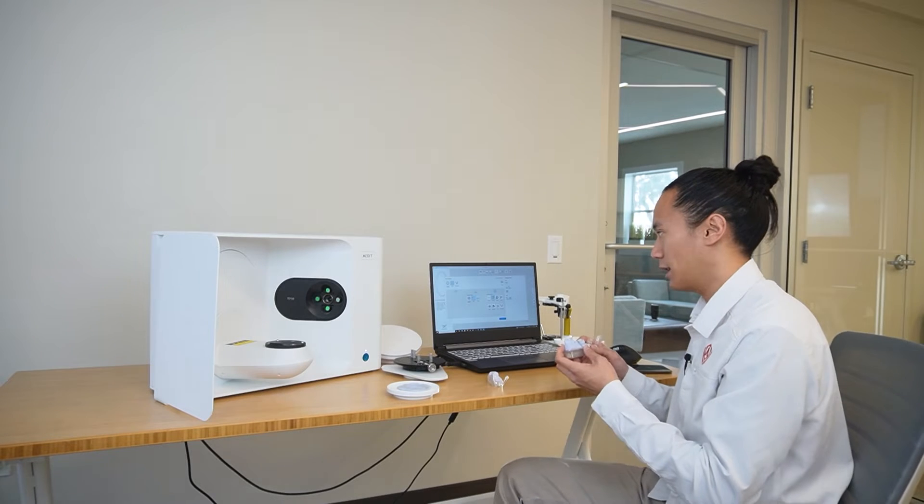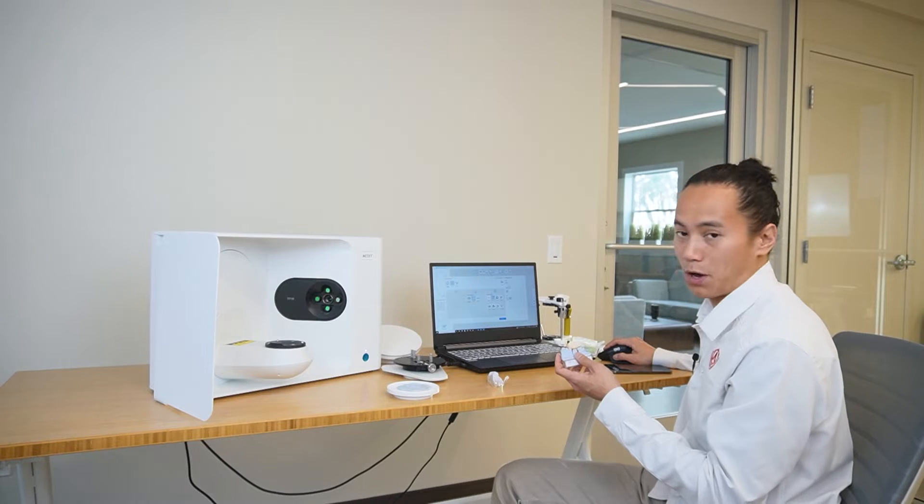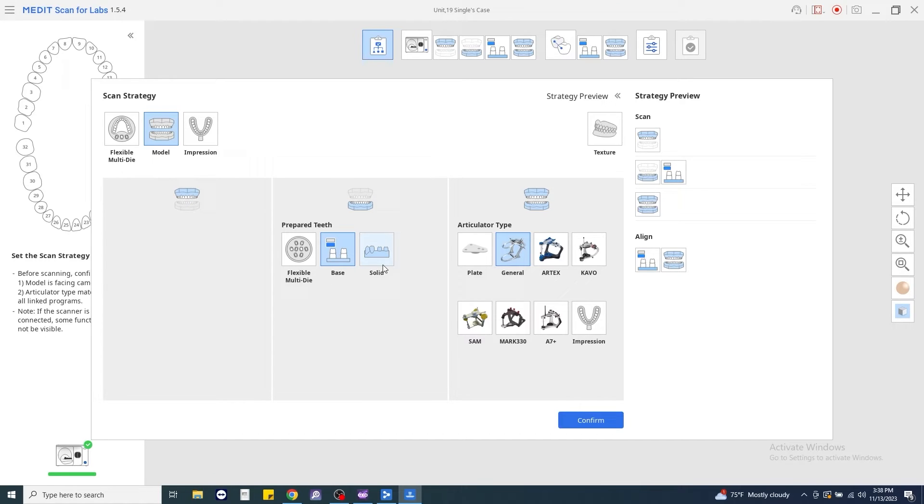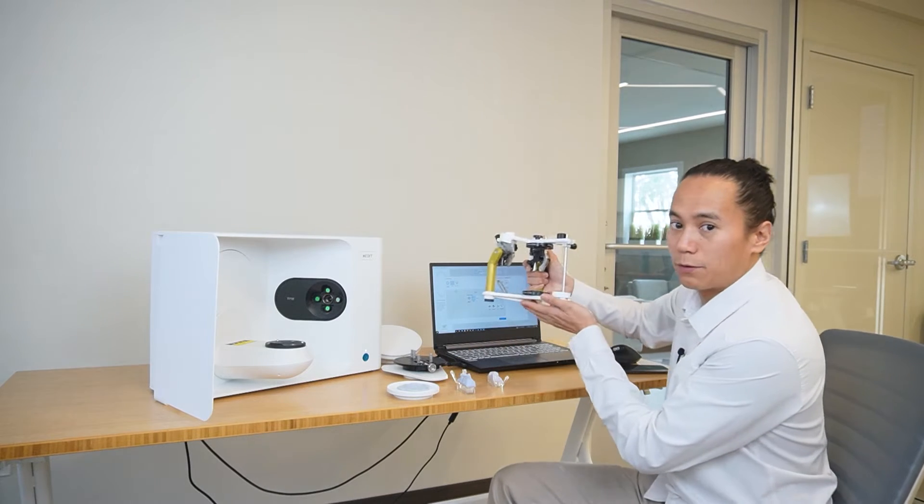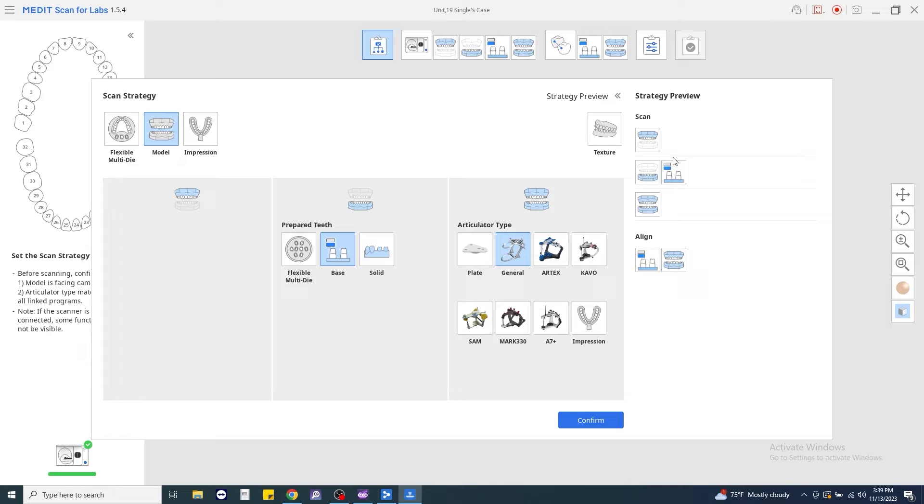If we had a solid task, a solid model, we would then choose a solid model. Under Articulator Type, we're just going to select General. We're going to go into the more complex full articulators later on. Once we have the strategy selected, we'll go ahead and click Confirm.